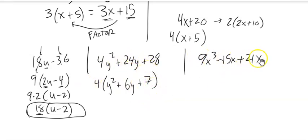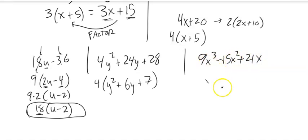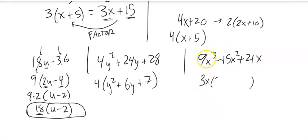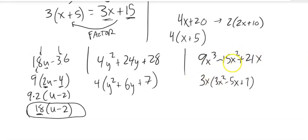Now let's take a look at this one. They all have an x, so I know I can take an x out. Also, 9, 15, 21 are all divisible by three, so take a three out. So 3x: if I divide 3x out of the first term, I'm left with 3x squared. If I divide 3x out of the second term, I'm left with minus 5x. If I take 3x out of the last term, the x is gone, leaving me a seven.